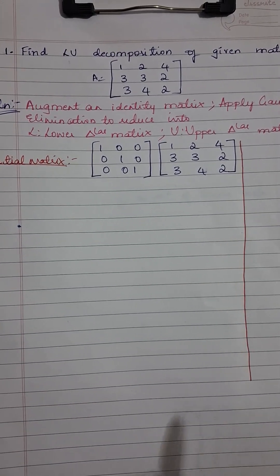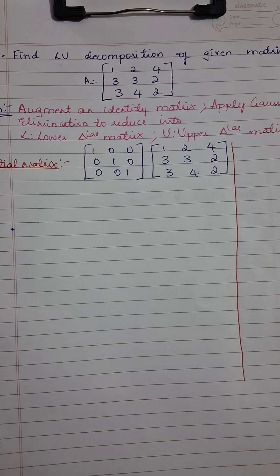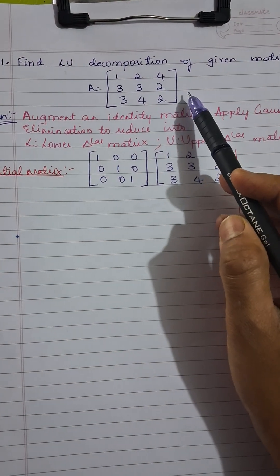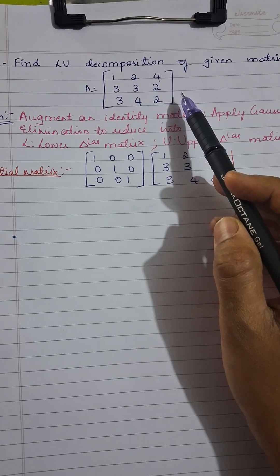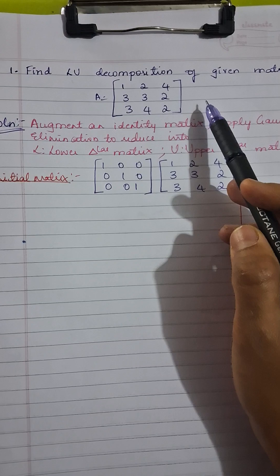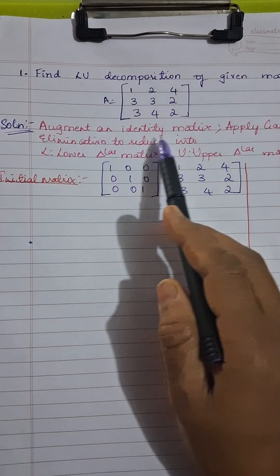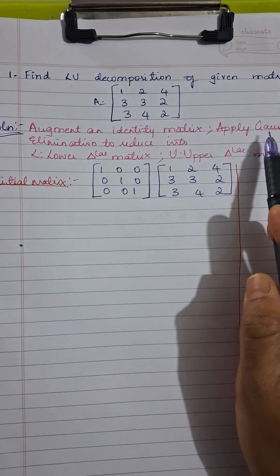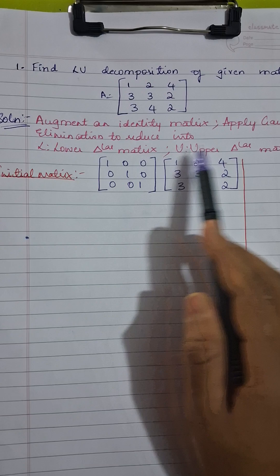Hello and welcome to the session. This session will discuss how we can find the LU decomposition of a given matrix. Matrix A has to be decomposed into two parts: L and U. L stands for lower triangular matrix and U stands for upper triangular matrix. We augment the identity matrix along with matrix A, then apply Gaussian elimination to reduce it into the two matrices L and U.